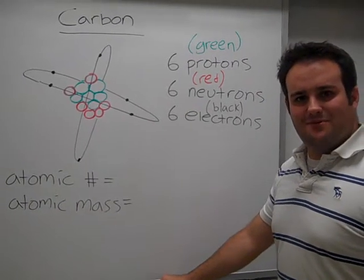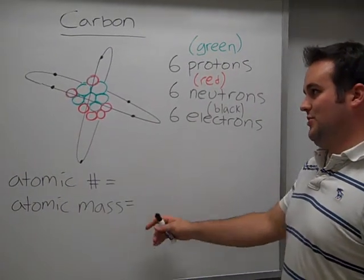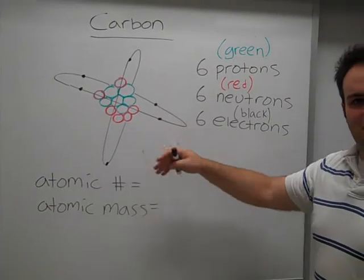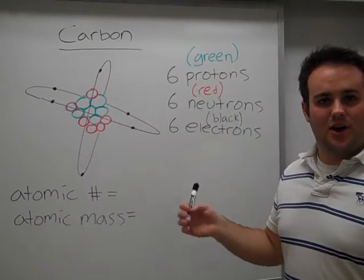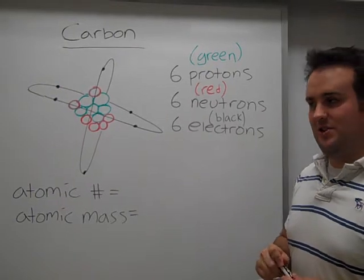Hey guys, welcome back. Last time we talked about basic atomic structure and that protons and neutrons make up the nucleus of an atom and electrons are orbiting the nucleus of the atom.